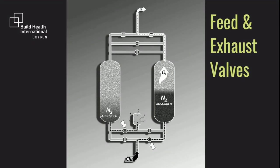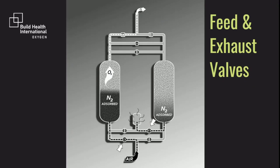We can see now why there are four valves on the bottom of the tank. The two valves on the bottom rung are the feed valves — they allow compressed air into the bottom of the tank. The two valves on the second rung are the exhaust valves — they allow the nitrogen in the full tanks to be exhausted out of the muffler. Here, the right-hand tank is producing oxygen while the left-hand tank is venting, so the right feed valve is open and the left exhaust valve is open. Here, the left tank is producing oxygen while the right tank is exhausting. Notice that the open feed and exhaust valves have changed.